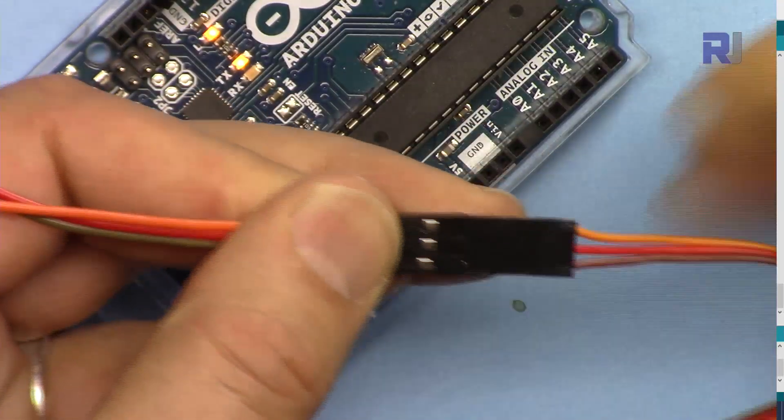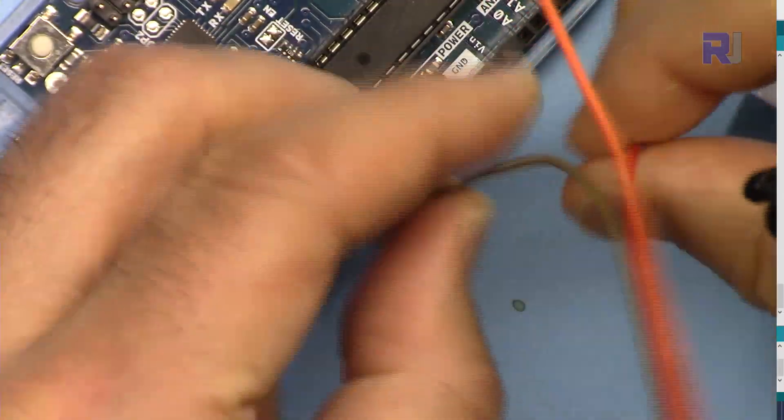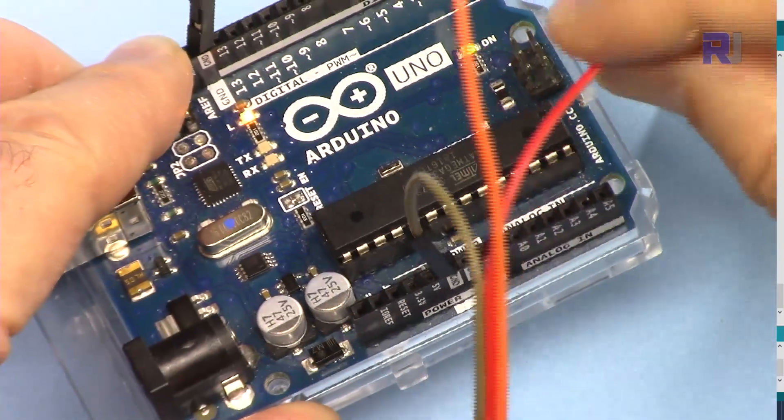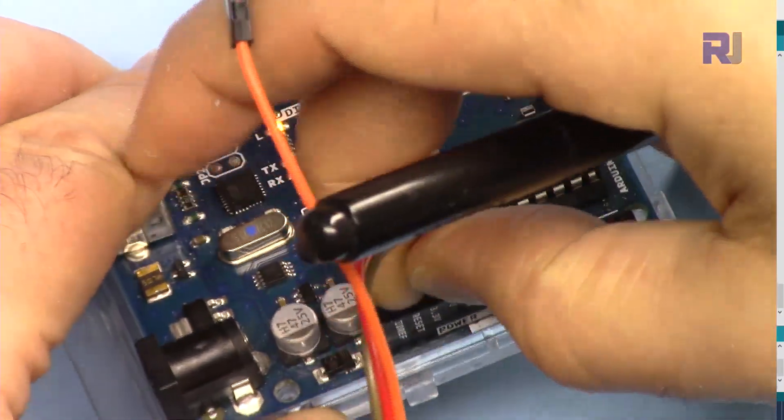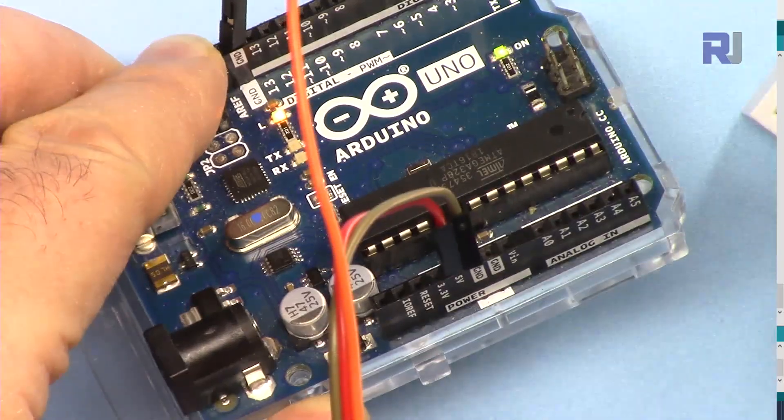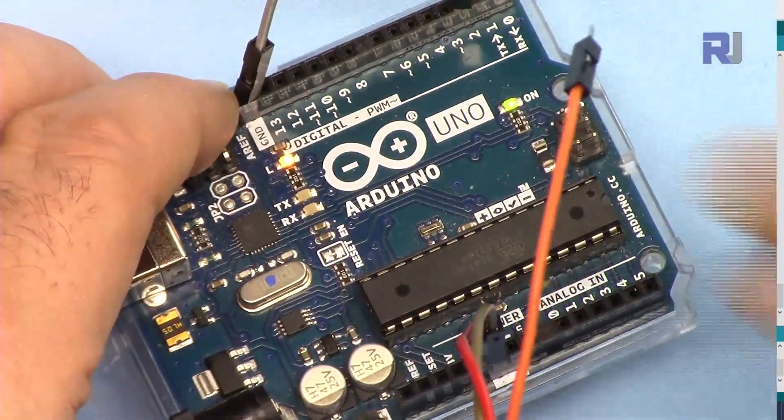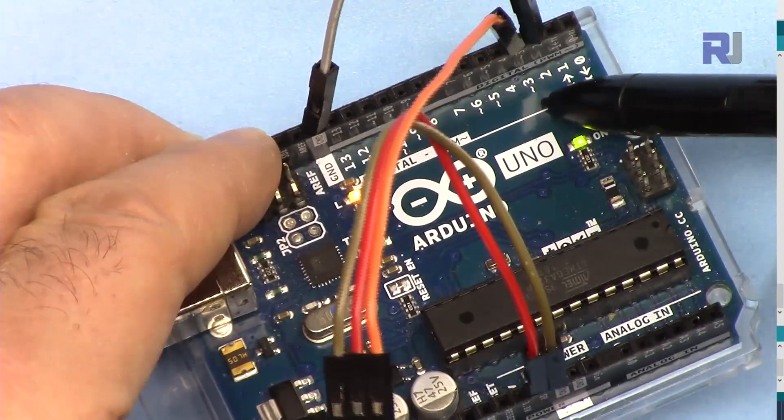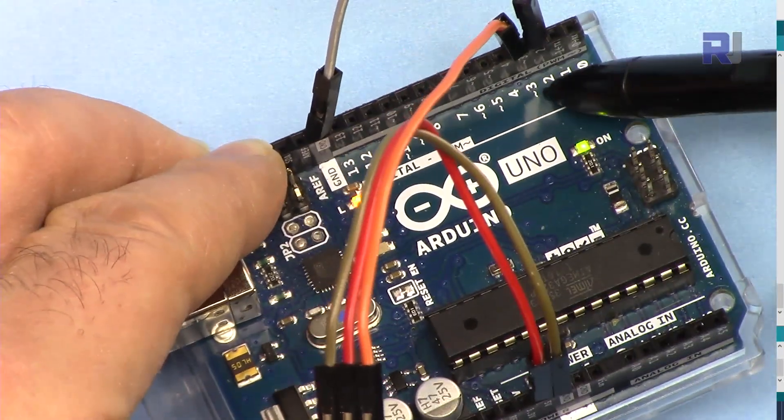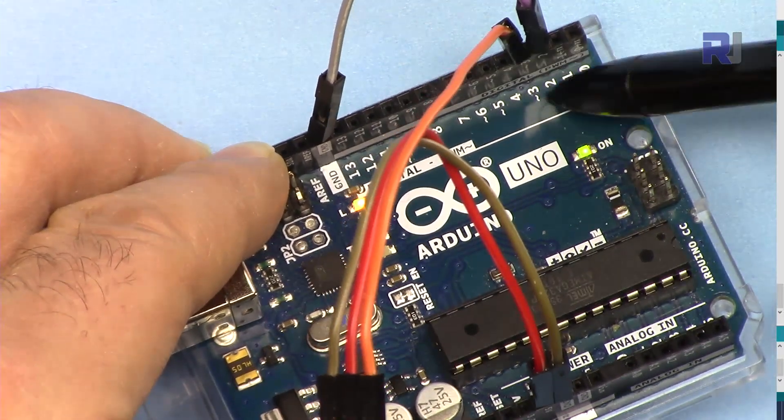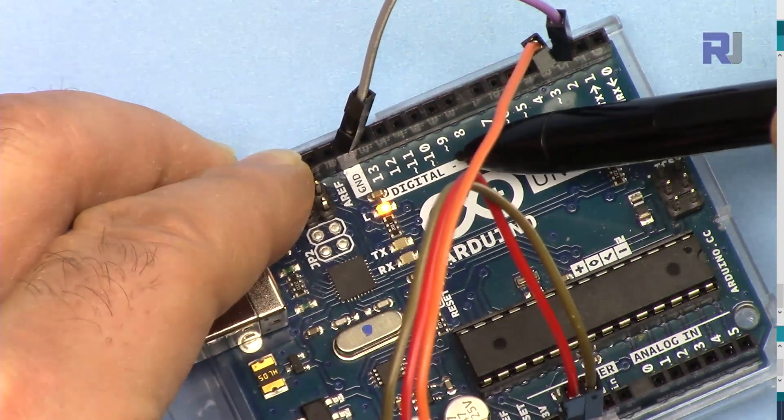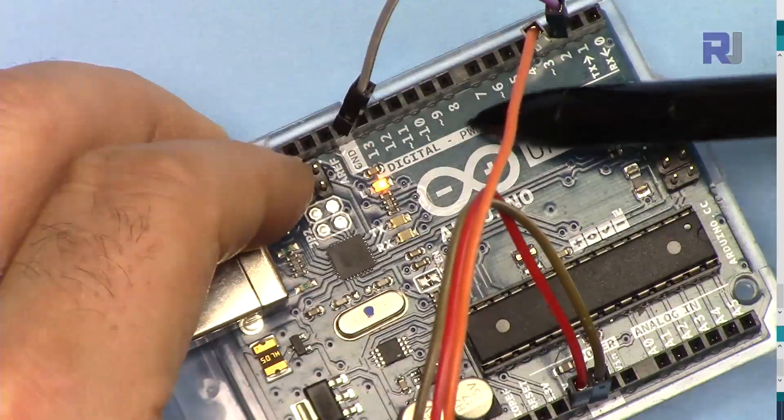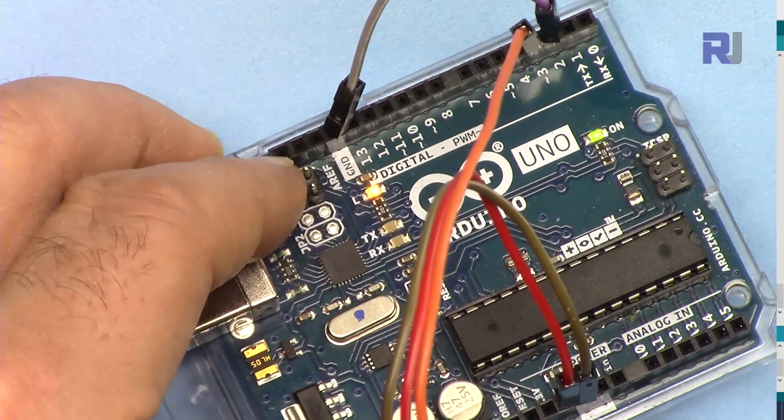Connect the brown wire to the ground of Arduino, the middle pin to five volts, and the signal wire orange to pin 3 in this case. If you pay attention here we have tilde at pin 3. Tilde is here: 5, 6, and 9, 10, 11. These are all pulse width modulation enabled pins. For example, 7 and 8 will not work. Four will not work, so keep that in mind.